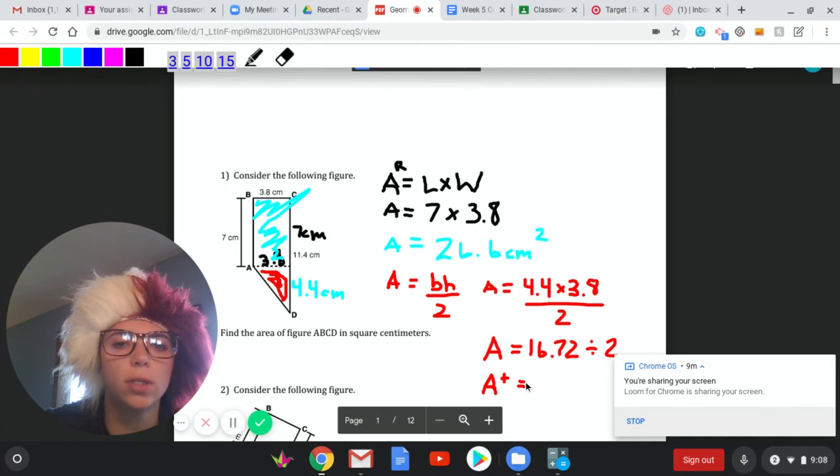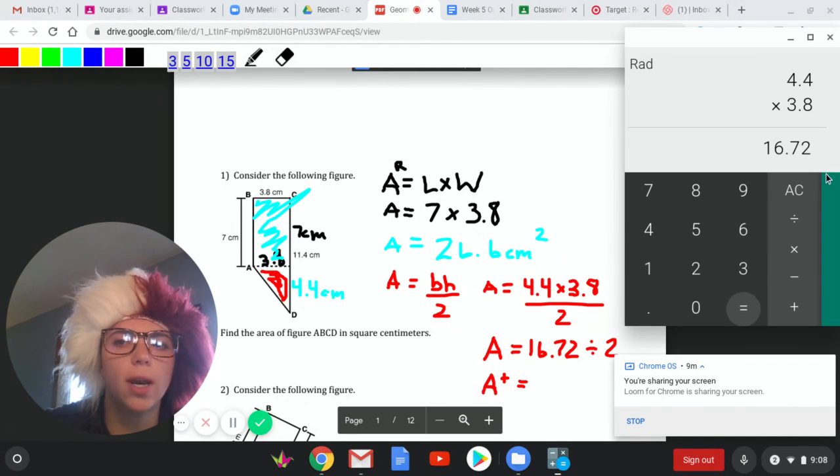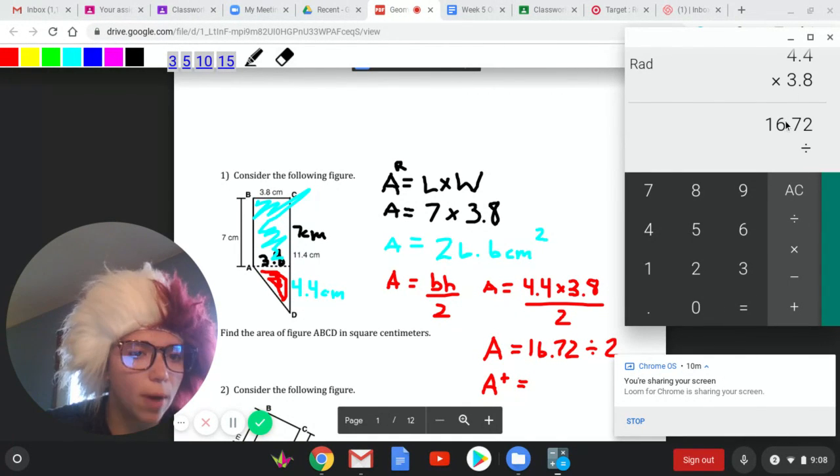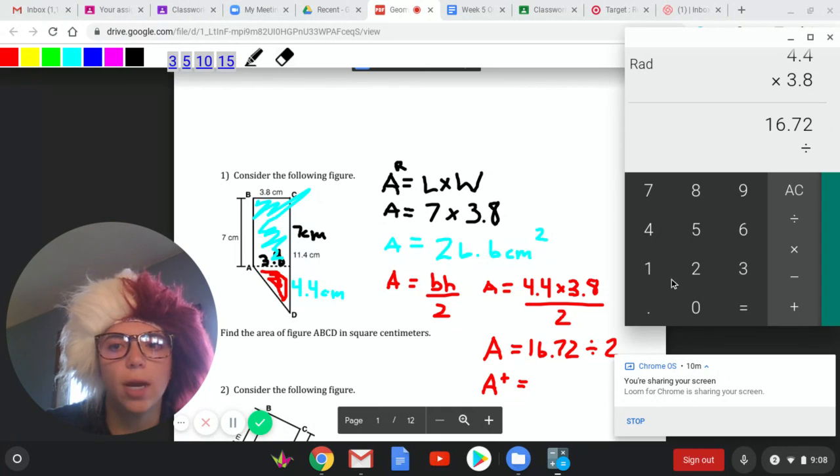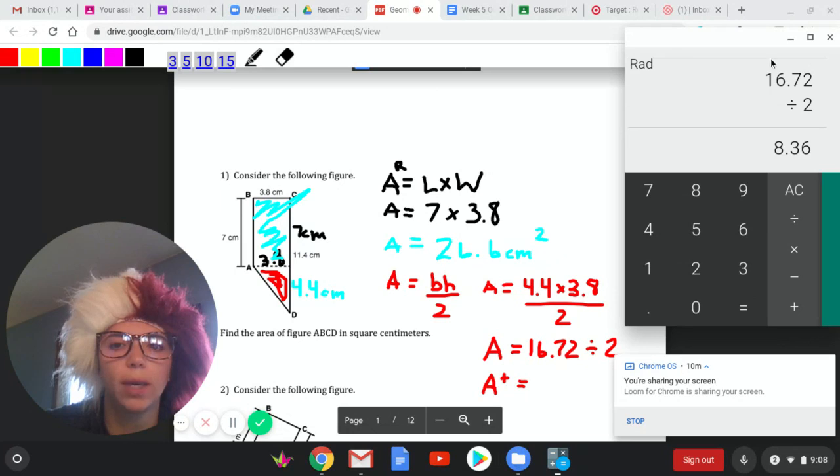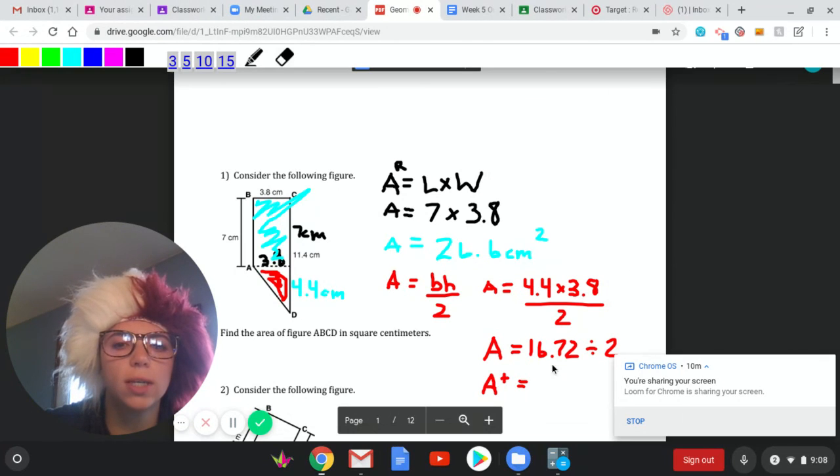Area of our triangle equals, we'll go back to our calculator, and now that you have this in here, if you hit divided by, it's going to just take the answer you had, and you'll divide it by 2 to get 8.36. So 8.36 is our area of our triangle. 8.36 centimeters squared. We always have to use centimeters squared. Anytime we're working with area, you're going to have units squared.